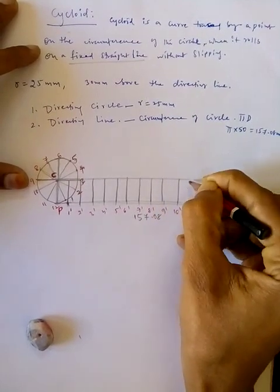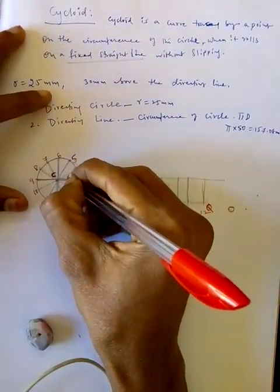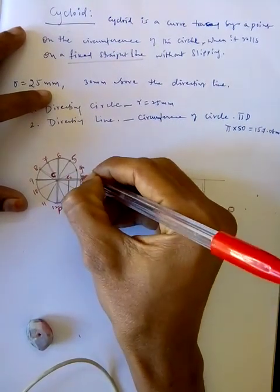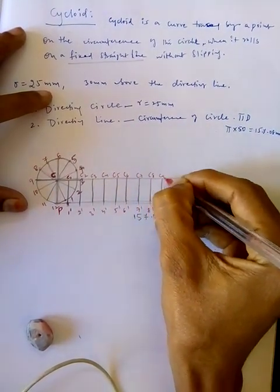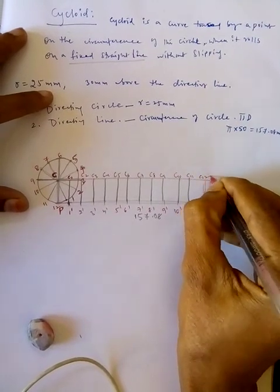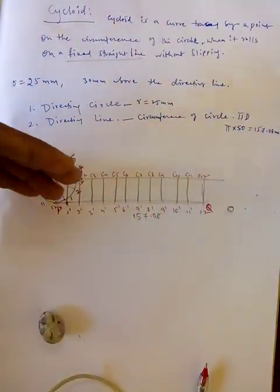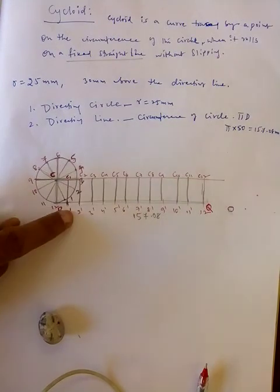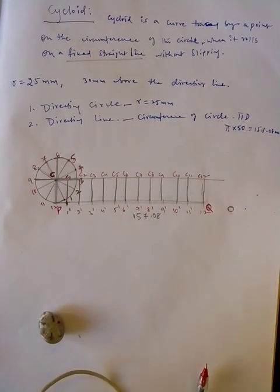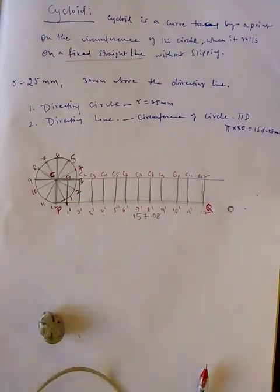Draw vertical lines from each division point 1′ through 12′ up to the center line. These intersections are the successive positions of the center: C1, C2, C3 ... C12. As the wheel rolls, it has infinitely many positions, but we take only these 12.